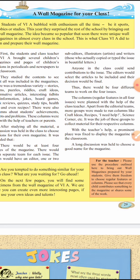Anyone in the class could send contributions to the issues. The editor would select the articles to be included, and their decision would be final. Thus there would be four different teams working on four issues. The regular column features in all four issues were planned with the help of the class teacher. Apart from the editorial team, more groups were made to run columns like craft ideas, recipes, 'I need help,' and science corner.